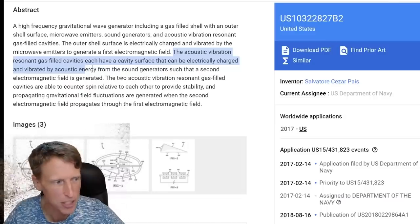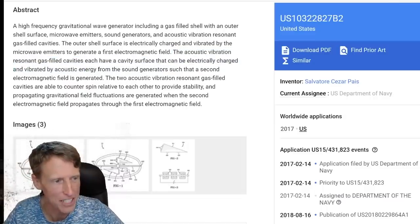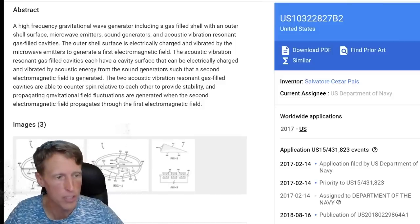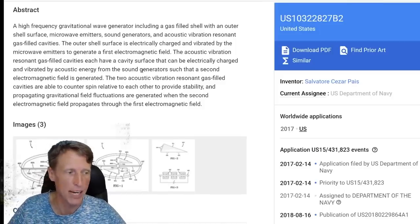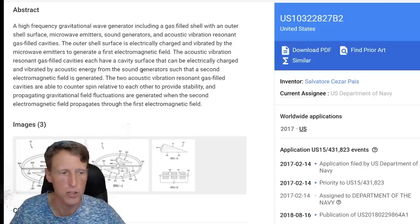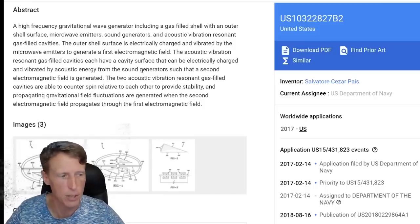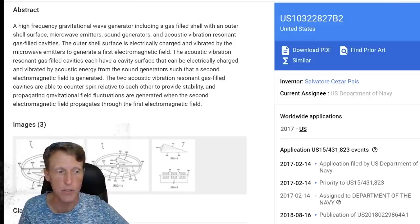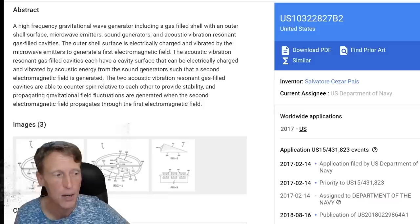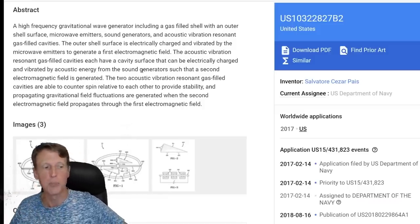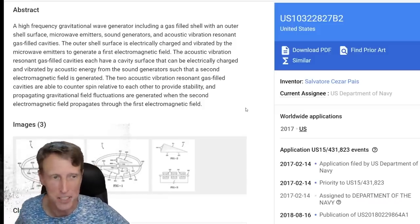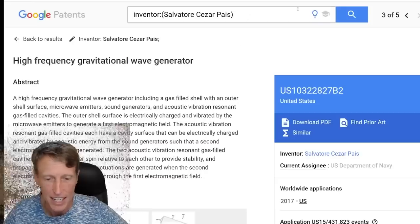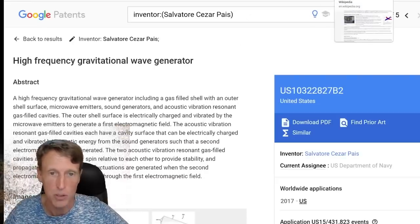Just to finish it here: the acoustic vibration resonant gas filled cavities each have a cavity surface that can be electrically charged and vibrated by acoustic energy from the sound generator such that a second magnetic field is generated - electromagnetic field. The two acoustic vibration resonant gas filled cavities are able to counter spin relative to each other to provide stability, and propagating gravitational field fluctuations are generated when the second electromagnetic field propagates through the first electromagnetic field. This happened in 2017. What I understand is they found as a result of this that they could not prove the Pais effect.